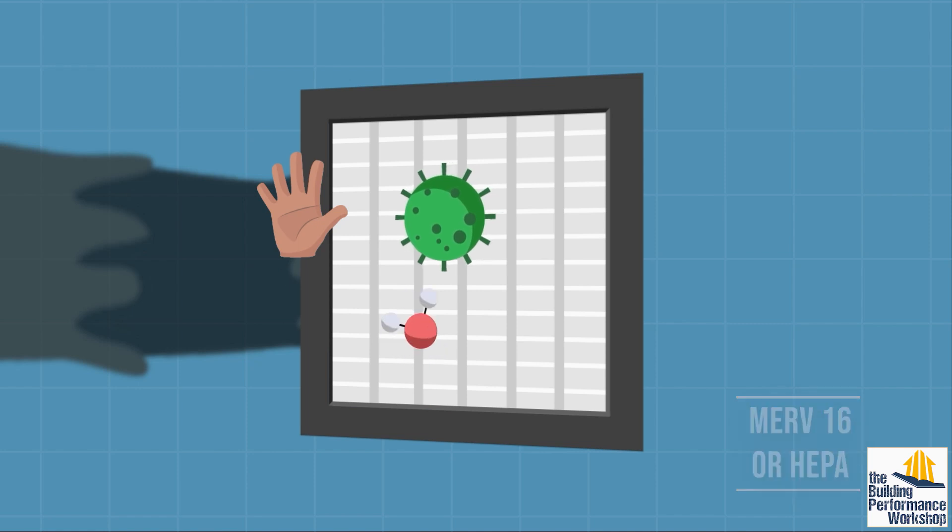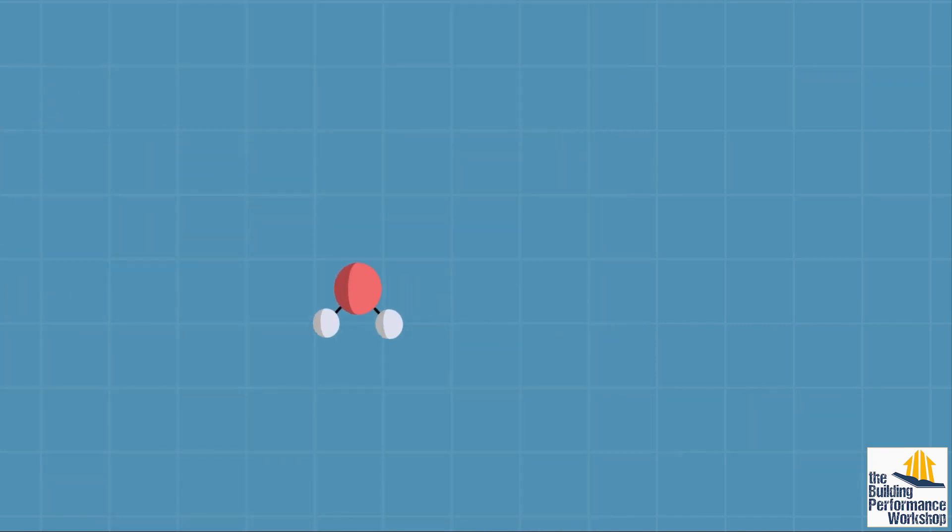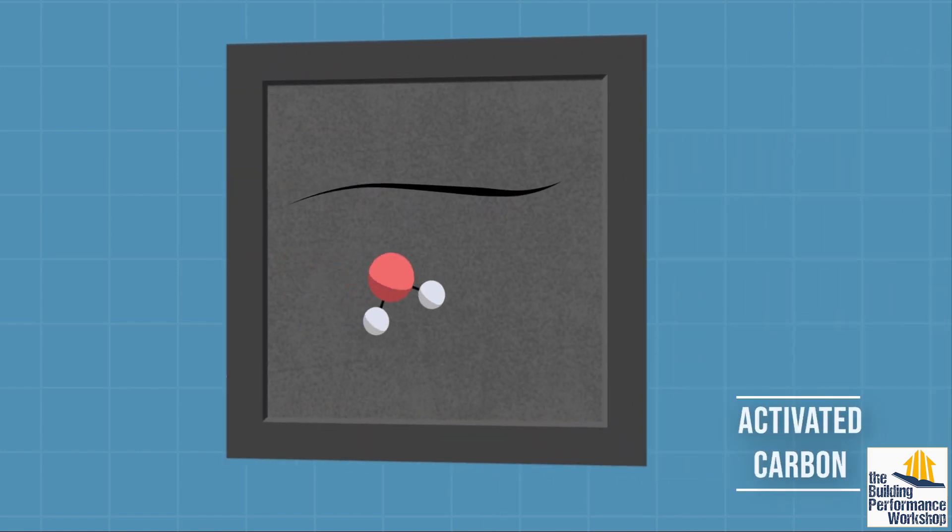And now we come to a single chemical molecule, like a VOC that you could smell. Even this magnified, it's only as big as a human hair next to our original 13-story building. It's snuck through every filter so far, but we can still capture it with a filter made of activated carbon or charcoal.